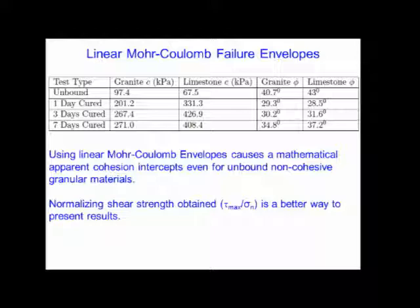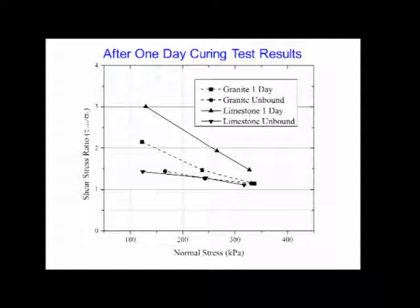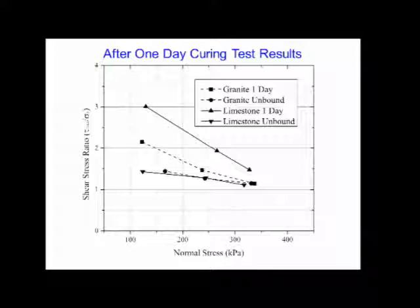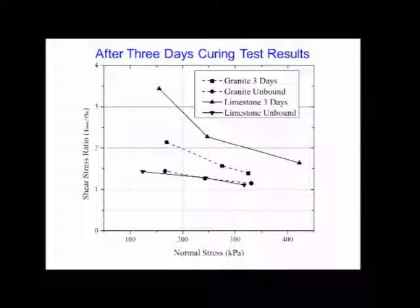We decided to show the results by normalizing shear stress with normal stress, τ_max / σ_n. As you can see in this plot, as normal stress increases, the shear stress ratio decreases. This is more pronounced in bonded conditions than unbound conditions, because in chemically bonded condition, even as physical strength increases, the chemical bond degrades — causing these decreases in the ratios. Also, granite had slightly higher unbound strength than limestone, but in bound conditions limestone was stronger.